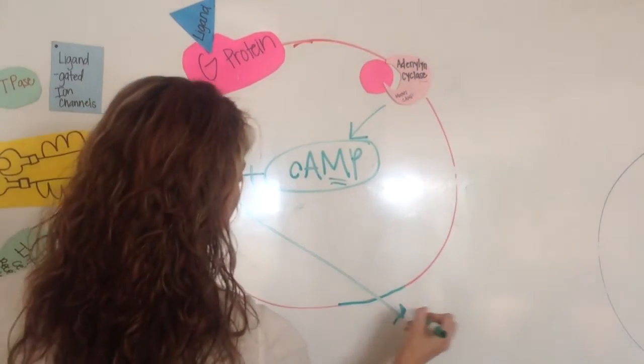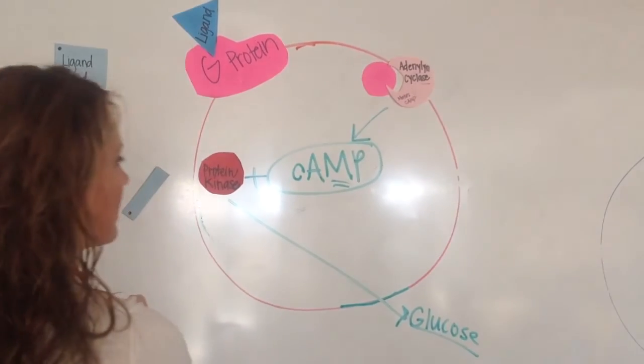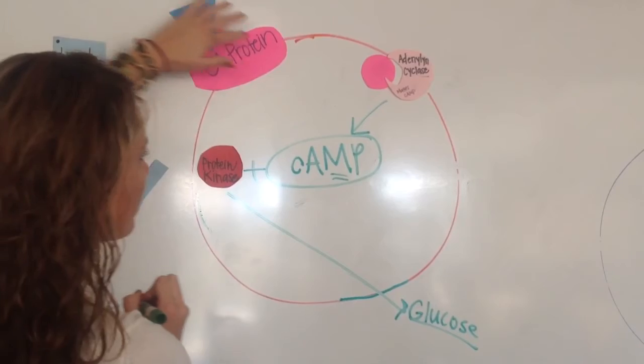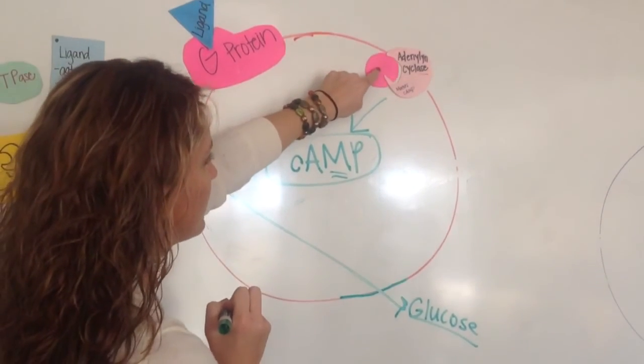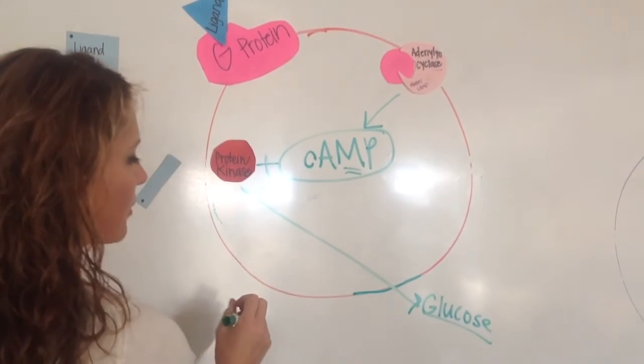And when that happens, it's going to release glucose from liver cells. So epinephrine was the ligand here, that's a hormone that attaches to adenyl cyclase, makes cAMP, and then the response is glucose. So while we're here, let me review signal transduction.